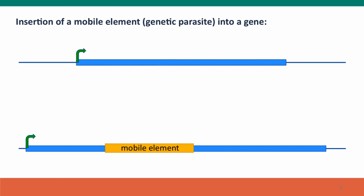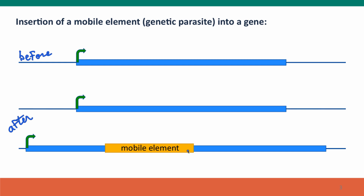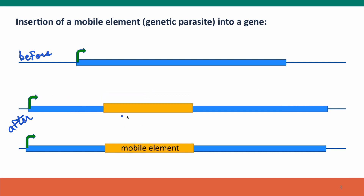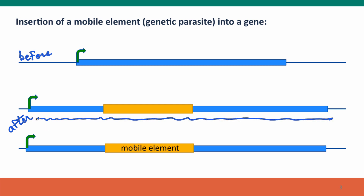We'll start with insertion of a mobile genetic element. Here I've shown the before and after of an insertion of a mobile element — what we've referred to earlier as a genetic parasite — into a gene. These mobile elements can insert anywhere in the chromosome, but here I've drawn it inserting into a gene. A copy of the mobile element comes to the gene, cuts it, inserts itself, and seals in, creating a continuous DNA double-stranded molecule that is part original gene and part new genetic parasite sequence.